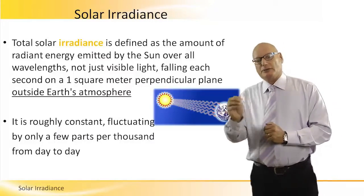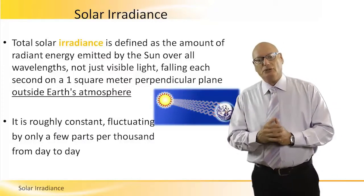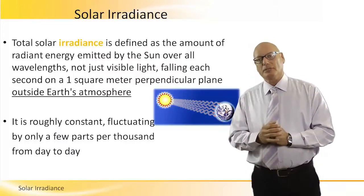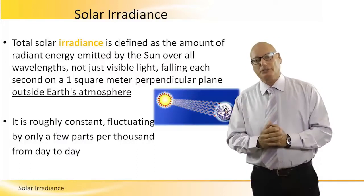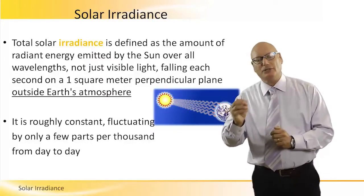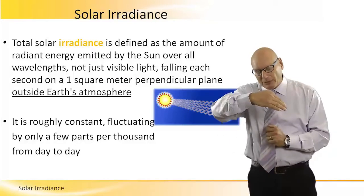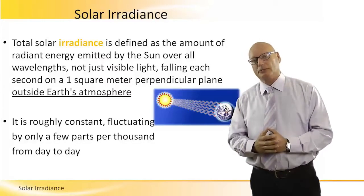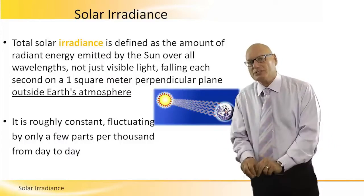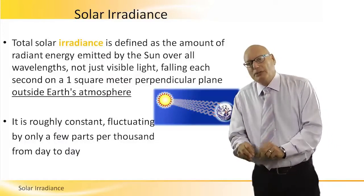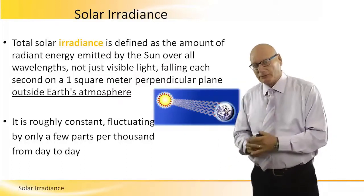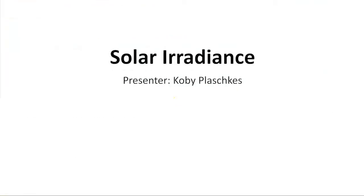On the outer surface of the Earth's atmosphere, the irradiance is known as the solar constant. It is equal to about 1,367 watts per square meter. That's on the boundary of the atmosphere — it's not what the ground sees, it's not what the PV system sees. It's on the boundary of the atmosphere: 1,367.